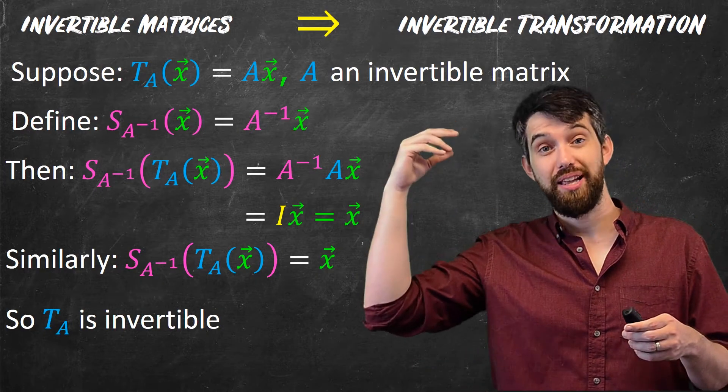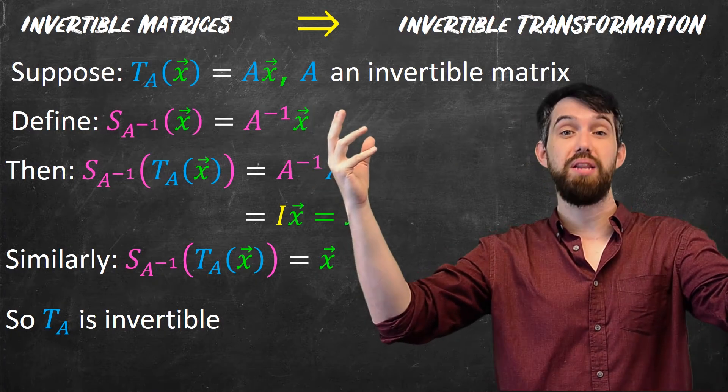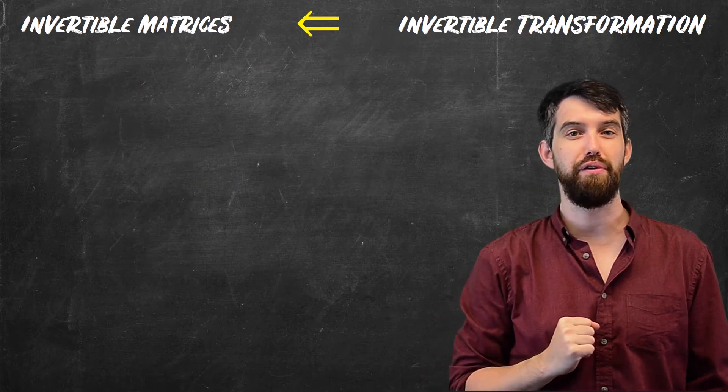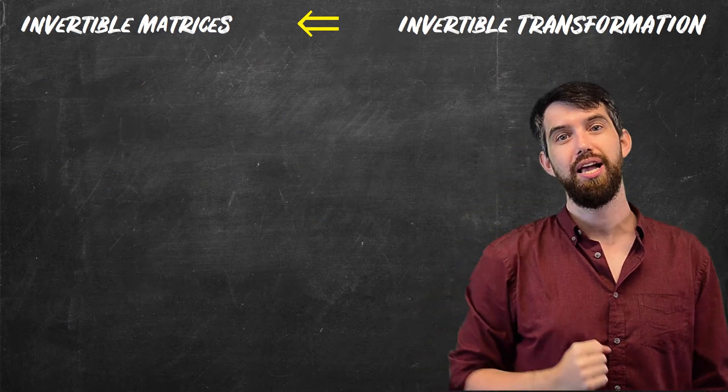I've managed to show that if it's an invertible matrix, then it's going to be an invertible transformation. But I still owe you the other side. I owe you this one. I start with the assumption of an invertible transformation, and I deduce an invertible matrix.